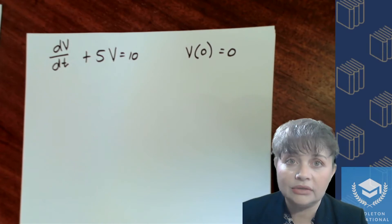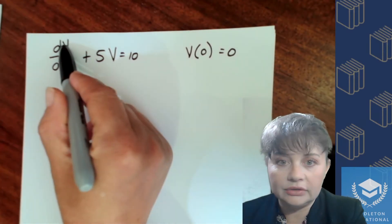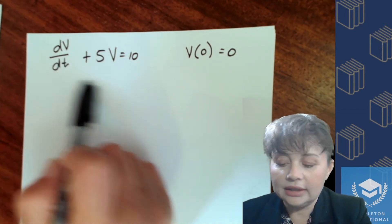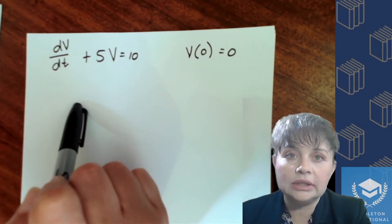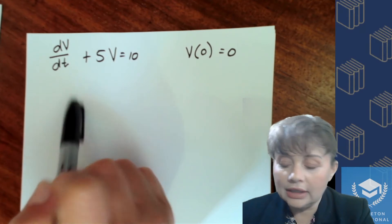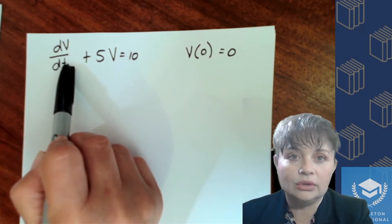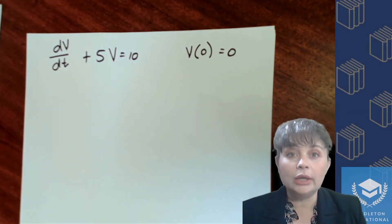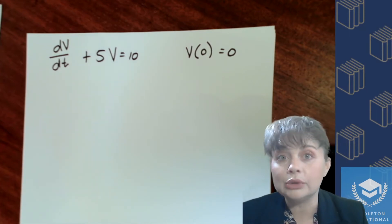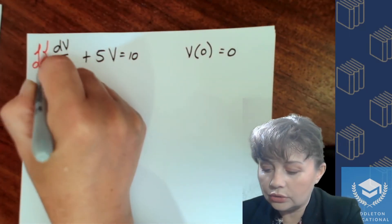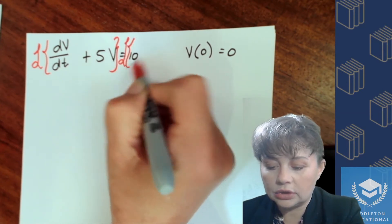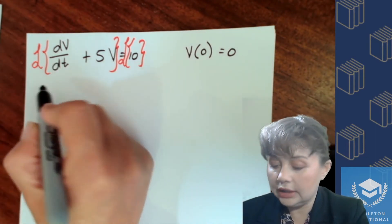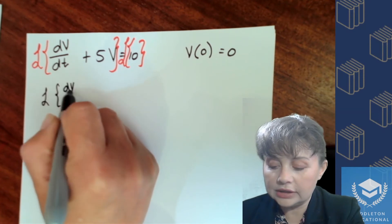In this equation, our dependent variable is v and our independent variable is t, so we're in the time domain. We want to transform it into the frequency domain or the s-domain — moving from where t is our independent variable to where s is our independent variable. The way we do that is to apply the Laplace transform to both sides of the equation, so we take the transform of each side. We'll have the Laplace transform of our first derivative...